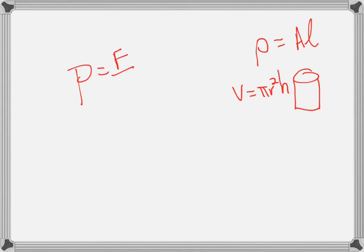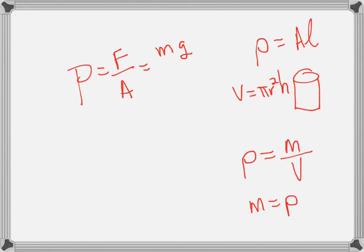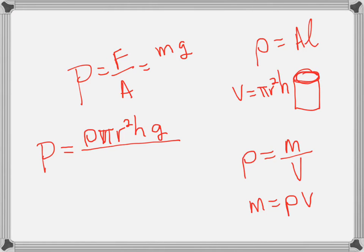Pressure is force over area. Force is mass times gravity. We know that density equals mass over volume. So the mass would equal the density of aluminum times the volume of the cylinder. What we could do for pressure is, in for mass, we could put the density times the volume, which would be pi r squared h, times gravity. And that would all be over the area that it's sitting on. The area that it's sitting on would be a circle, so that would be pi r squared. And pi r squareds cancel out.